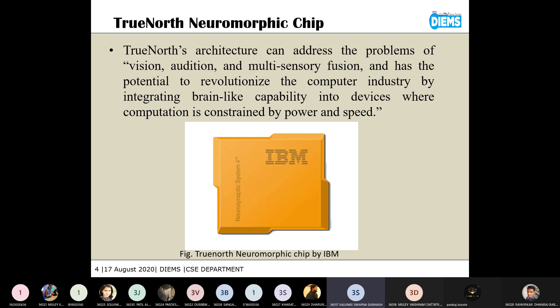The TrueNorth chip, which is invented by IBM, is a neuromorphic chip based on the human brain structure. This can process various inputs with noises. If we are using these chips in our artificial intelligence machines or machine learning models, then that system cannot process that data very efficiently.